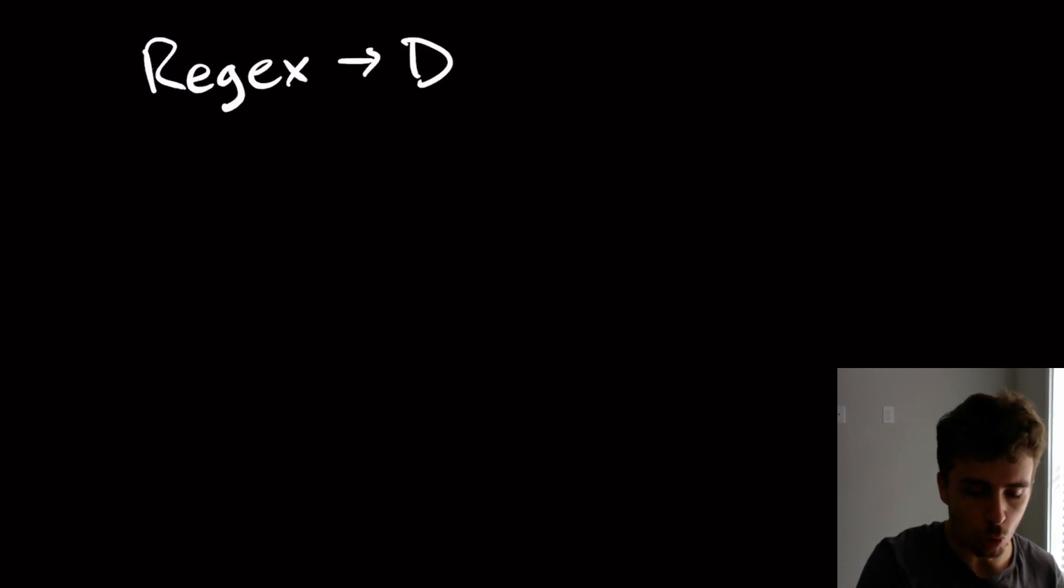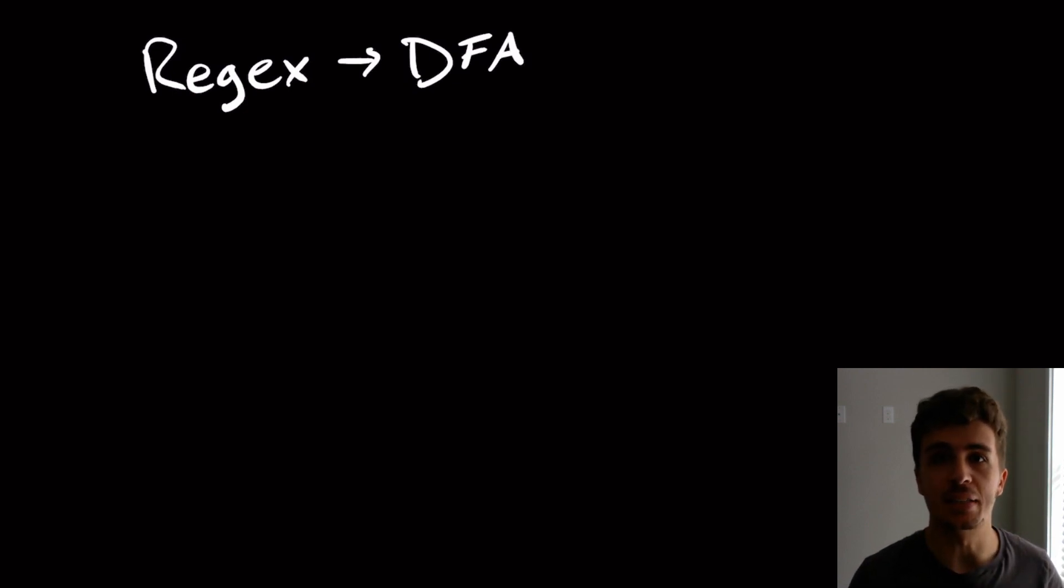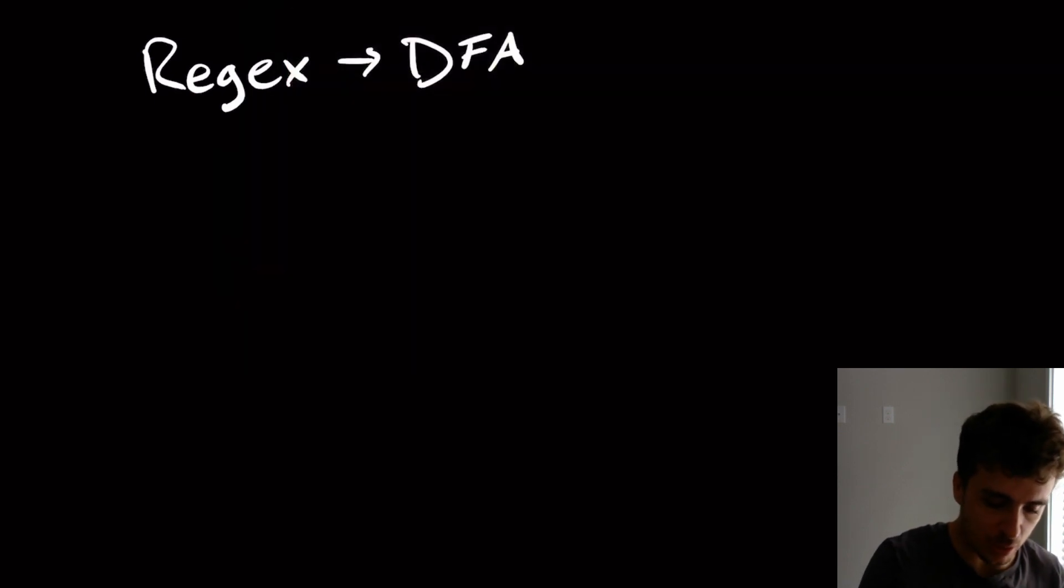Hi and welcome to another edition of Easy Theory. Today we're going to do something really interesting, which is take a regex and convert it directly to a DFA. The existing method is to convert a regex to an NFA and then that NFA to a DFA, but using the Brzezowski derivatives that we talked about before, you can do this step directly. The whole idea is to construct the DFA one state at a time, and I think it's best to do this with an example.